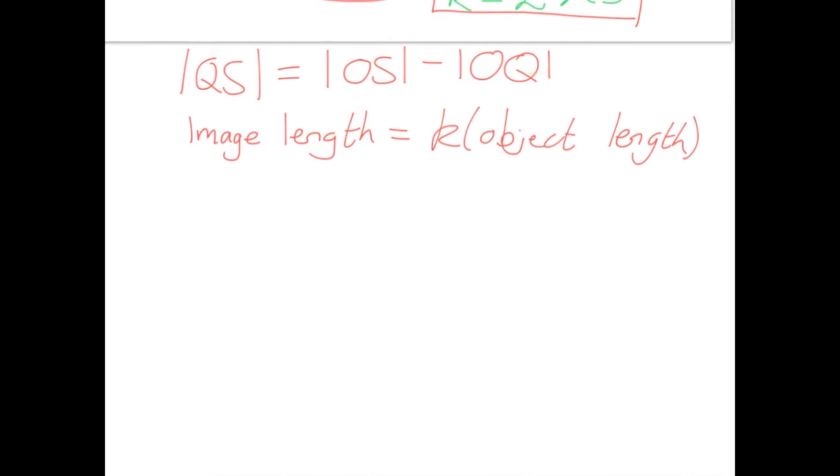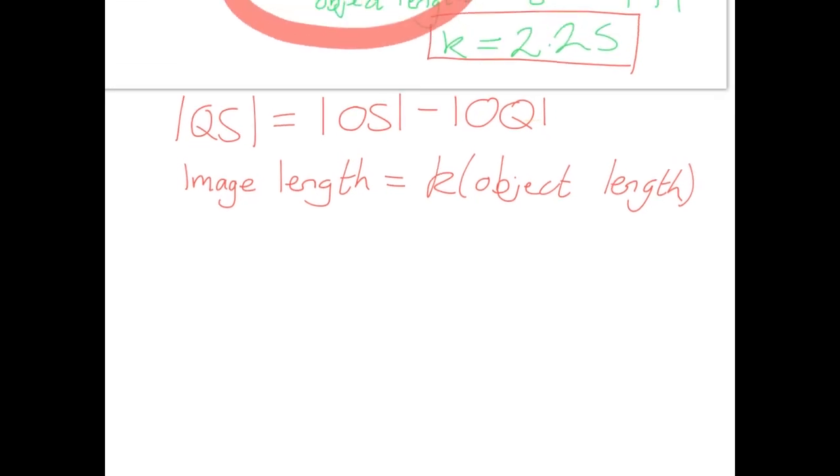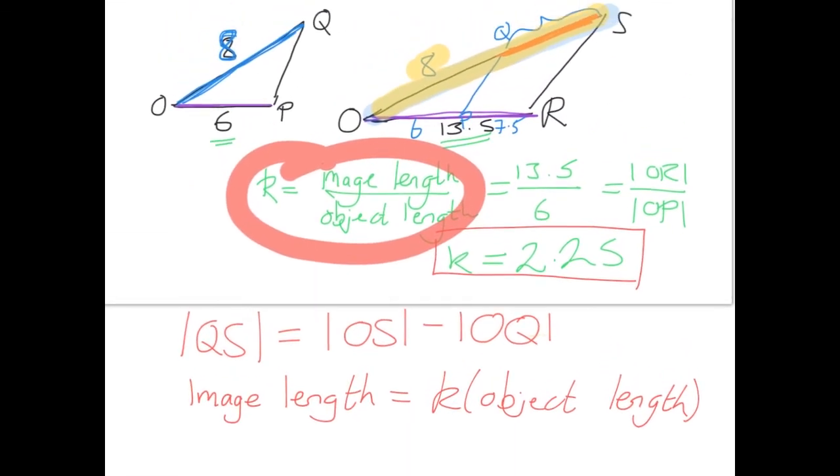So if our K we worked out above was 2.25, and our object length on that side is our original 8 here. This will be our object length, this whole line is our image length that we want to work out, our OS.